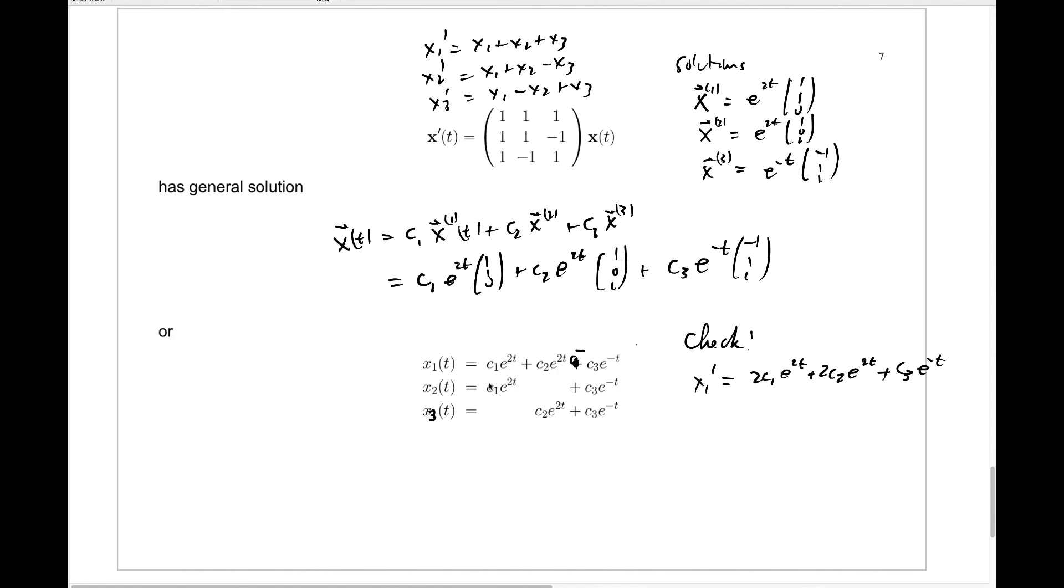Is this really x1 plus x2 plus x3? If you add up—they're nicely arranged in columns—you'll get 2c1 e to the 2t, you'll get 2c2 e to the 2t, and when you add these you'll get a single c3 e to the minus t. So that this actually is equal to x1 plus x2 plus x3. I'll put a check here.